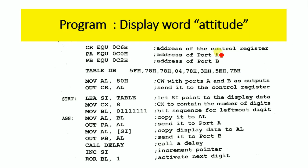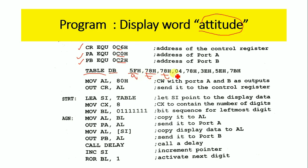Now we will look at the program to display the word ATTITUDE. The control word register, Port A, and Port B addresses are defined as C6, C0, and C2 respectively. A lookup table is defined with the hex values: 5F for A, 78 for T, 78 for T, 04 for I, 78 for T, 3E for U, 5E for D, and 5B for E — representing the word ATTITUDE.